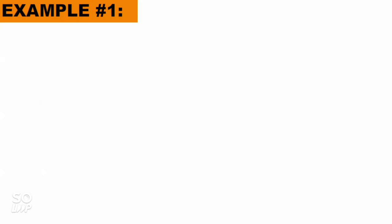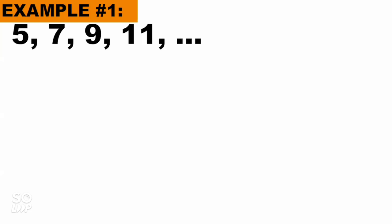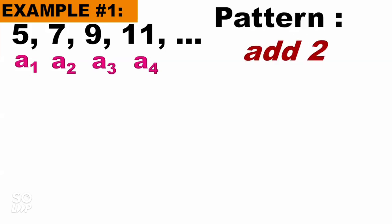We have example number 1 on how to find the general term given the terms of the sequence. Number 1: 5, 7, 9, 11. Our a sub 1 is 5, a sub 2 is 7, a sub 3 is 9. If we observe the sequence, the pattern is we add 2: 5 plus 2 is 7, plus 2 is 9, plus 2 is 11.